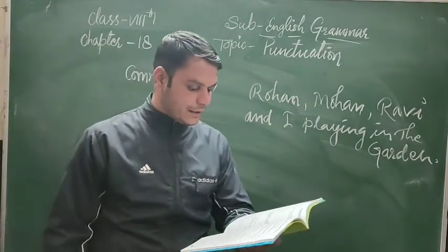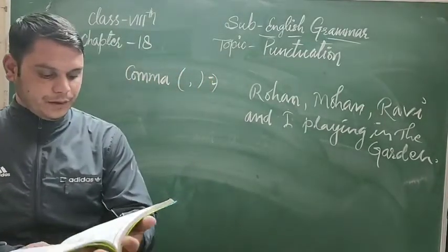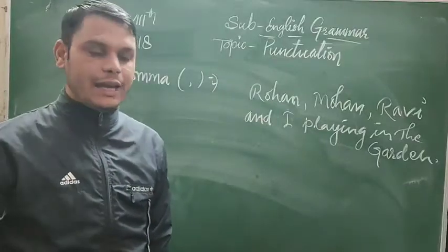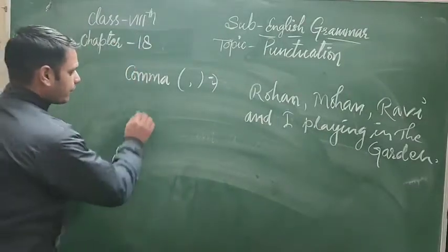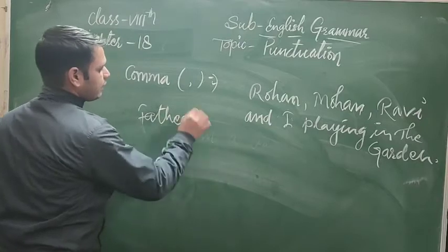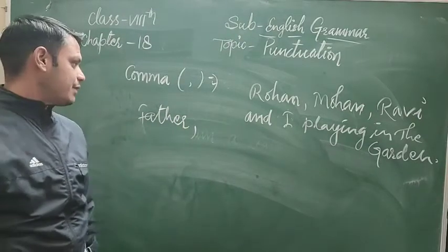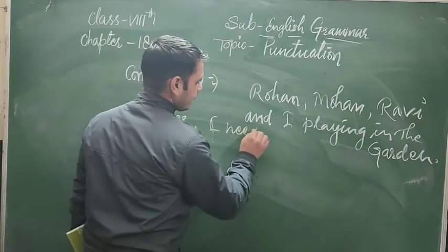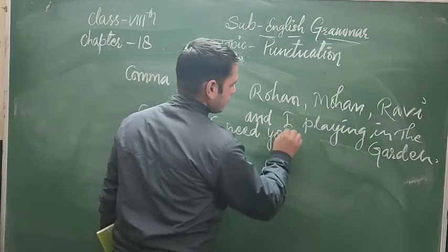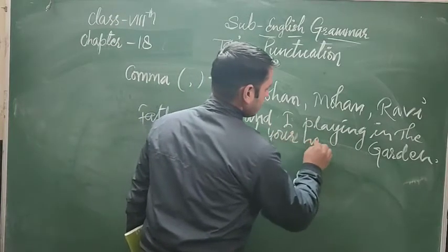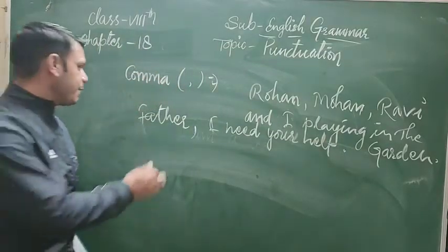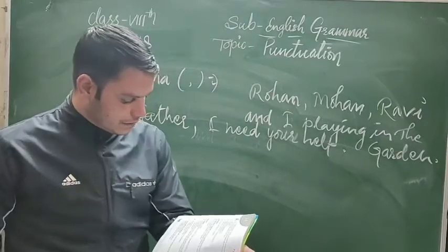Next: to set off a noun of address — यानि जब आप किसी को address करते हैं। For example: 'Father, I need your help.' यहाँ 'Father' के बाद comma लगाना most necessary है। So to separate the noun of address, you use a comma.